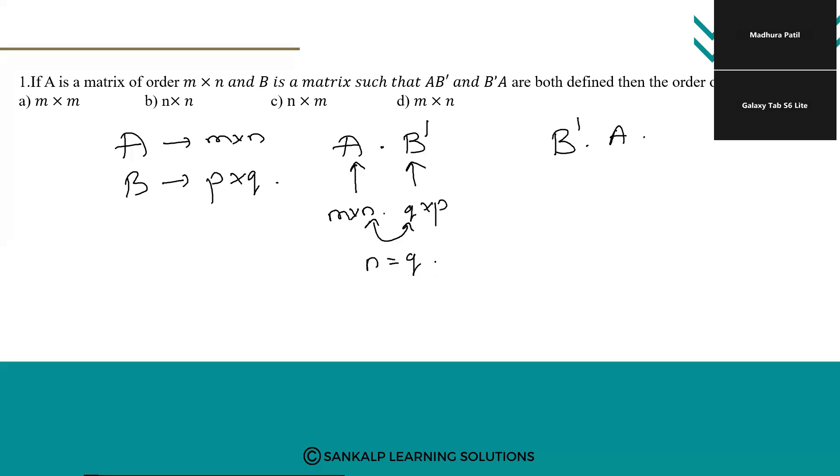Now again since this product is defined and by the rule this order is Q cross P and this order is n cross n. So by the rule it is clear that P should be equal to n.